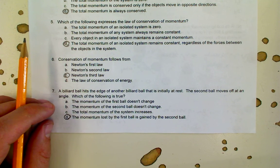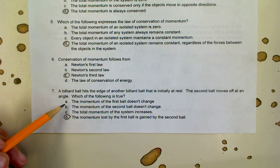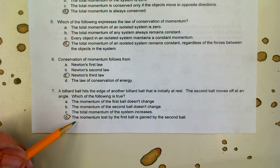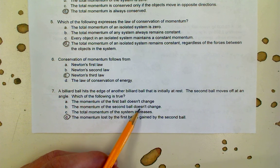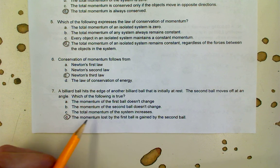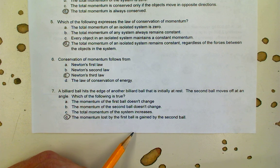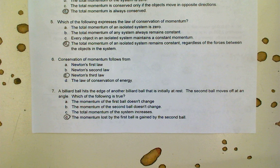Finally, the last question on this side. A billiard ball hits the edge of another billiard ball that is initially at rest and the second ball moves off at an angle. The correct answer is D: momentum lost by the first ball is gained by the second ball. That's the same thing we saw with the marble and the billiard ball in question number two above. Surely the momentum of the second ball changes because it's at rest and then it's moving. We know that the total momentum of the system must be constant because of conservation of momentum, and ultimately the momentum of the first ball has to decrease so that the momentum of the second ball can increase. The next video will cover the backside of this formative.